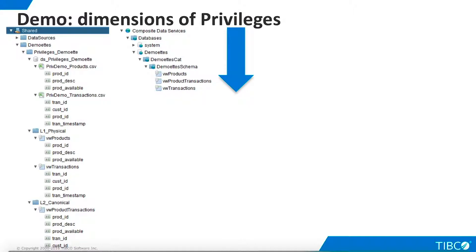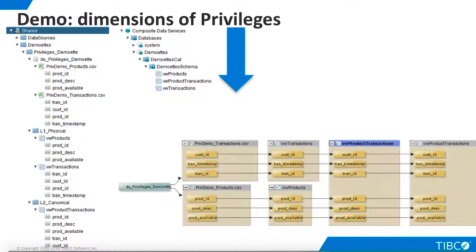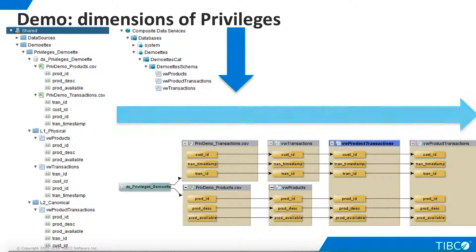We might think of this dimension as a vertical assignment of privileges. In addition, we must consider the lineage of the view, assigning appropriate privileges to all ancestors and descendants in the chain of resources that make up the published resource. We might think of this dimension as a horizontal assignment of privileges.